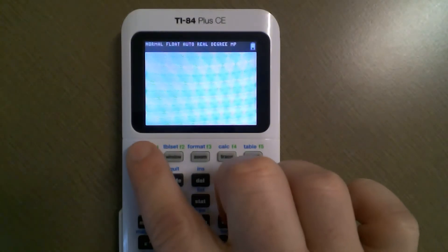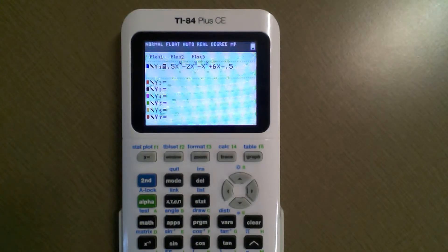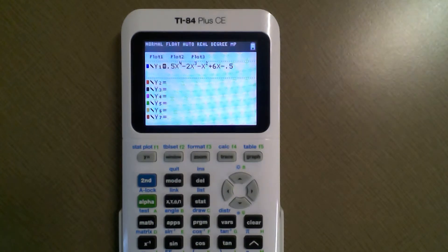We'll start by going to Y equals and typing in the polynomial that we're given. I've got one here already typed in. We're going to take a look at what this looks like on our graph.